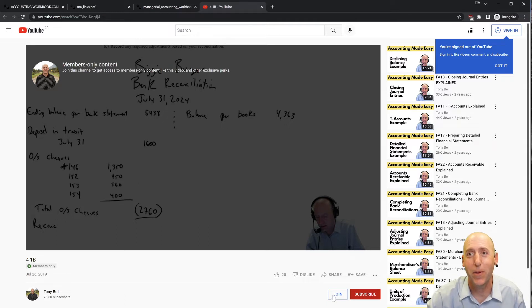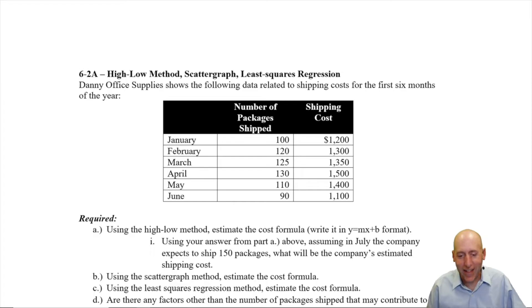Okay, let's jump into the problem. Let's examine problem 6.2a. This has us doing the high-low method, scatter graph method, and least squares regression method. I'm going to split this into three videos because I do want to spend a bit of time on each.